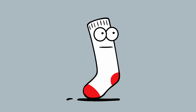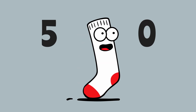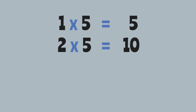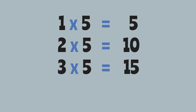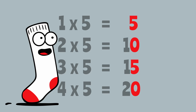Second secret, and this is a big one. If you multiply by five, your answer will always end in five or zero. Watch this — one times five is five, two times five is ten, three times five is fifteen, four times five is twenty. Five, zero, five, zero. It's a guaranteed pattern.